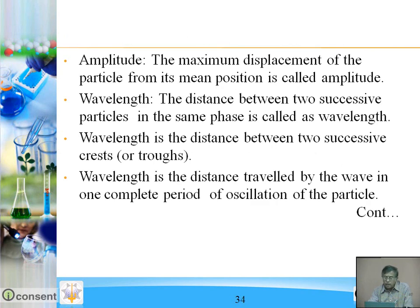Amplitude: the maximum displacement of the particle from its mean position — from either side, right or left — is called amplitude. Wavelength: the distance between two successive particles in the same phase, that is in the same state of vibration, is called wavelength. Wavelength is the distance between two successive crests or troughs, and in longitudinal waves, between two compressions or two rarefactions. Wavelength is the distance travelled by the wave in one complete period of oscillation of the particle.